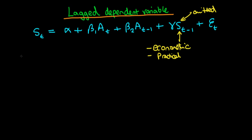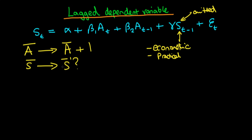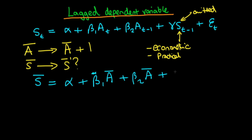The questions we're going to ask here are much the same as before. If the level of advertising is fixed and then goes up permanently by one unit, what is the effect on sales? And then we'll look at what is the effect of temporary increases in advertising spend on sales. To work out the total effect of a one unit permanent change in advertising, we assume that sales and advertising are at constant levels, so S-bar equals alpha plus beta-1 times A-bar plus beta-2 times A-bar plus gamma times S-bar.